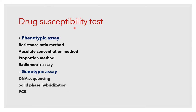Drug susceptibility testing can be done by phenotypic or genotypic methods. Phenotypic methods include the resistance ratio method, absolute concentration method, proportion method, and radiometric assay. Genotypic methods include DNA sequencing, solid phase hybridization, and PCR.